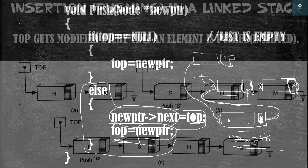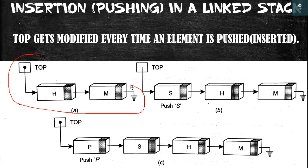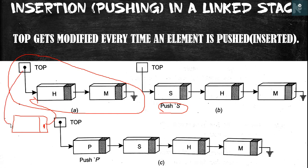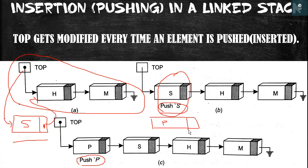Now let us insert some elements inside this link stack. Initially top points to the first element and the first element points to the second element. To push 's', we create a node with 's', make its next pointer point to the first node, then make top point to 's'. To push 'p', we create a node with 'p', make its next pointer point to the first node, then make top point to 'p'. In this way we can insert elements in a link stack.